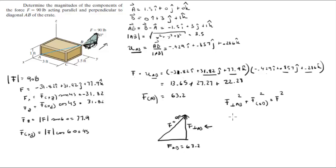So the perpendicular is the one we don't know. It's squared plus F along AB, 63.2 squared, and this is 90 squared. When you solve, you're going to get that the perpendicular force is equal to 64.1. So this is the perpendicular, and this is the one along or parallel to AB. Final answer.